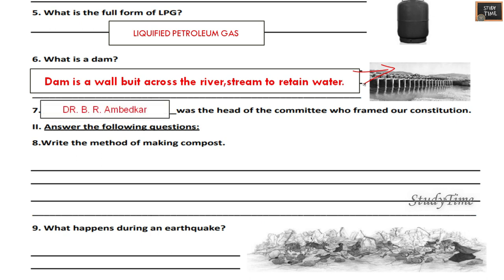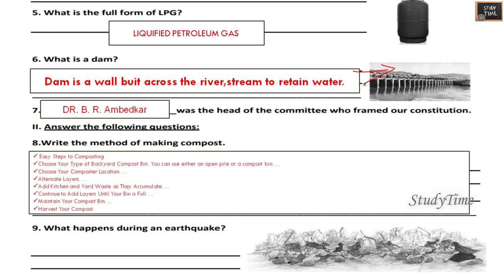Write the method of making compost. You have to write at least two points depending on the marks allotted. The easy steps to composting are: choose your type of backyard compost bin; select your compost location; alternate layers; add kitchen and yard waste as they accumulate; continue to add layers; maintain your compost bin; and finally harvest your compost.